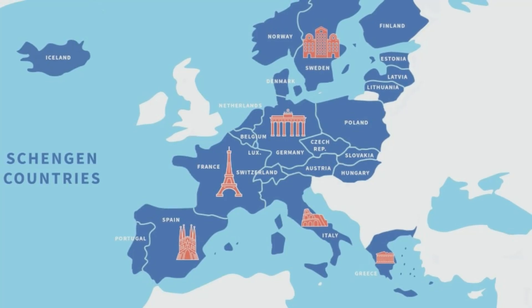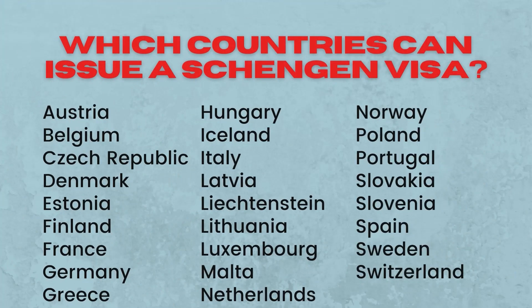A Schengen visa is issued by any of the following countries. A multiple-entry Schengen visa will also allow you entry into some other European nations. So, if you are visiting family or friends or your loved one in the Schengen zone, you most likely need to obtain an invitation letter from them.